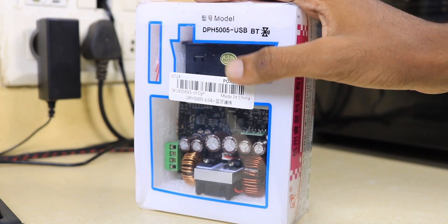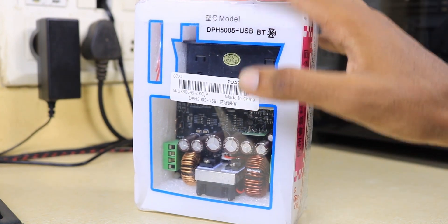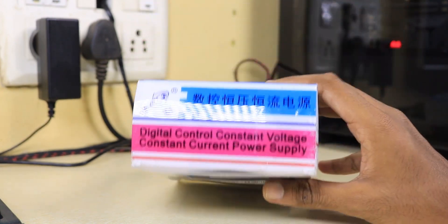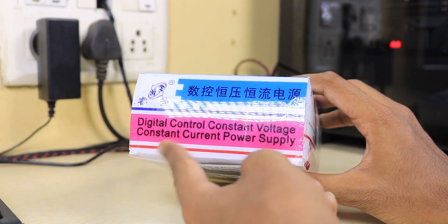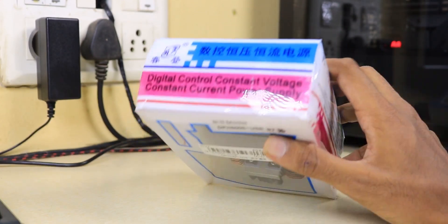This is a buck-boost converter capable of 50V and 5A, specifically made for digitally controlled power supplies. It provides constant voltage and constant current power supply functionality.